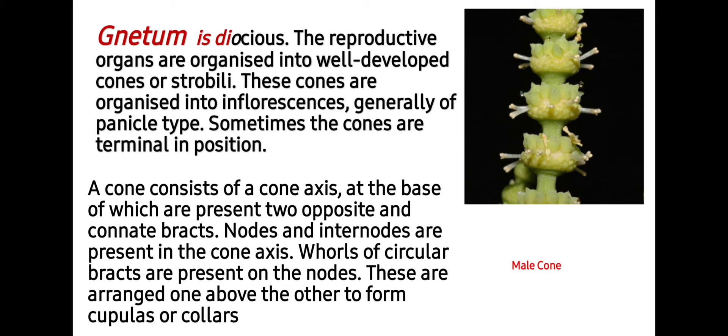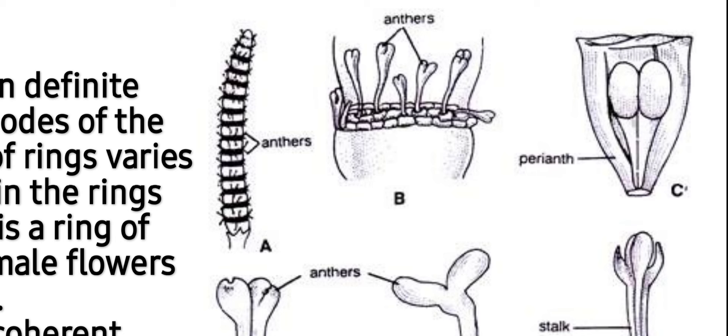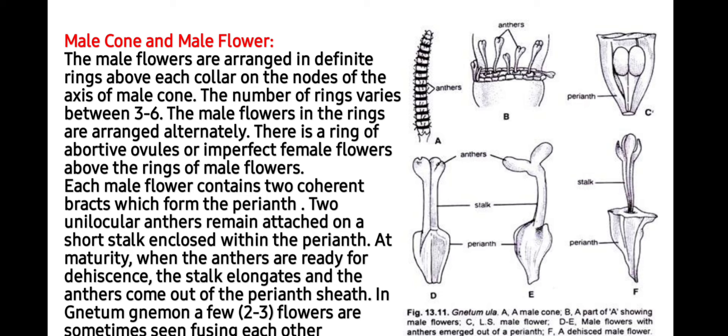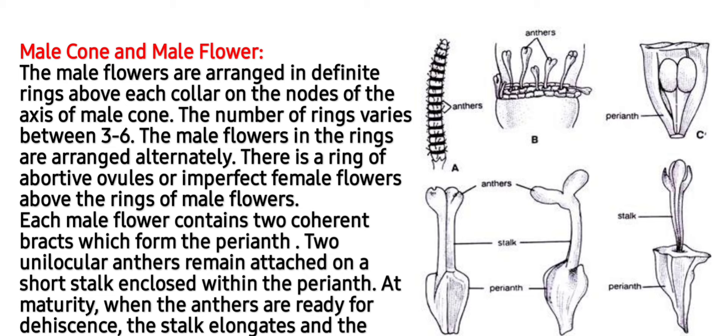These bracts are arranged one above the other to form a cupule or collar. In this image you can see nodes and internodes, while here the bracts are organized to form the perianth. The male cones are arranged in a definite ring above each collar on the nodes of the axis of the male cone, as you can see in this image. The number of rings varies between three to six.